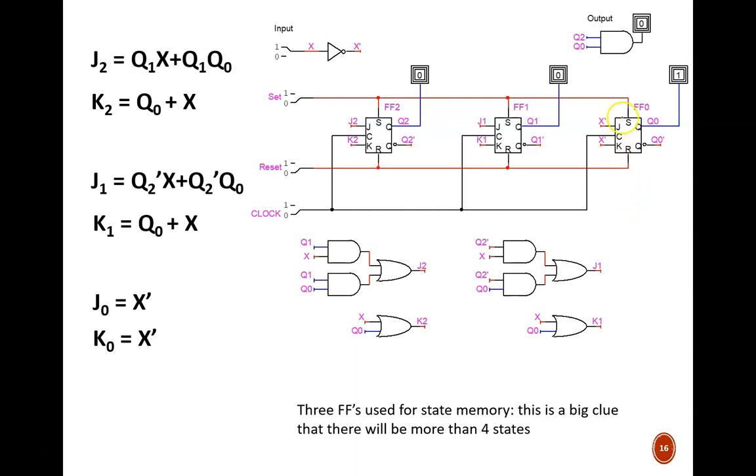Looking at the inputs to flip-flop 0, x' feeds into both of them. At this stage, we can also find the equation for the output logic, taken from this top AND gate. I decided to name that signal z. With the equations, we can derive the next state table.